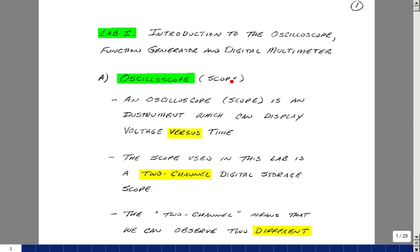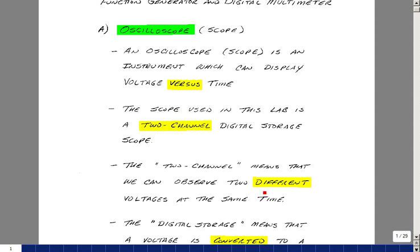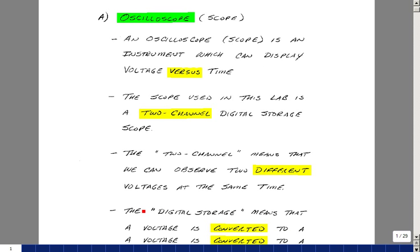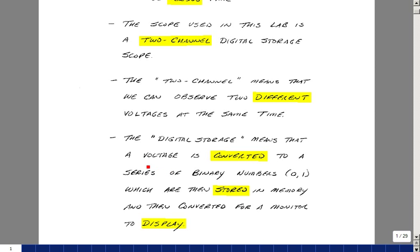The oscilloscope, or just scope, is a device that can measure voltage versus time. The scope we're using in lab is called a two-channel digital storage scope. By two channels, we mean we can measure two different voltages at the same time. Digital storage means our measured voltage is converted to a series of binary numbers which are stored in memory and then converted so we can display them on a monitor.